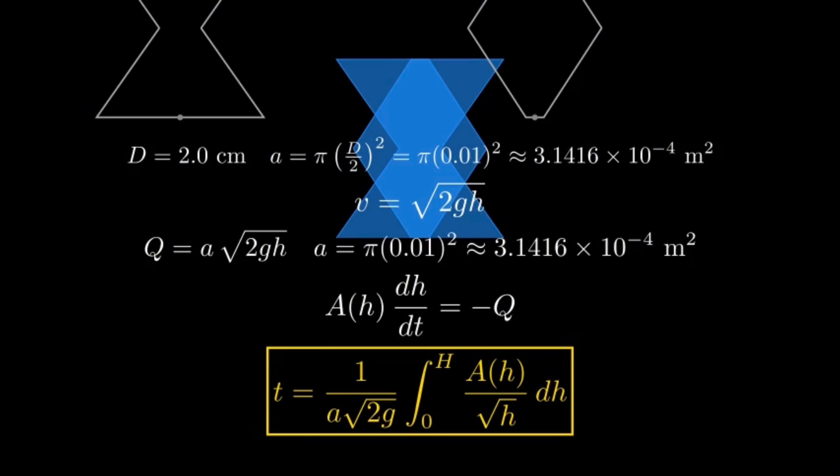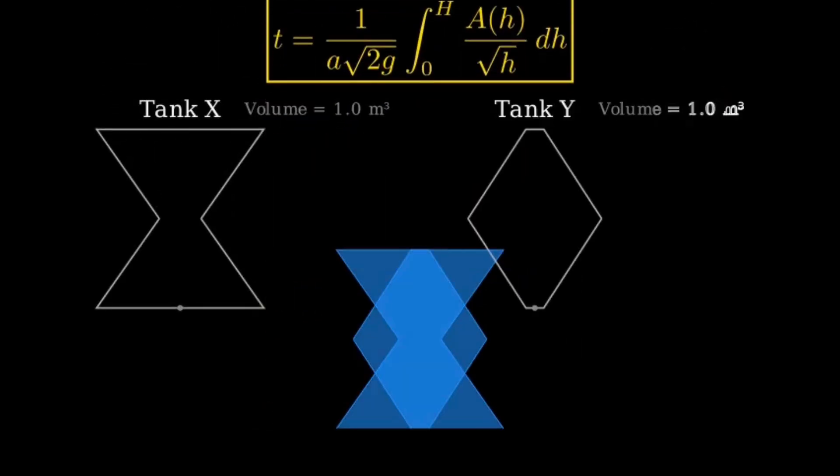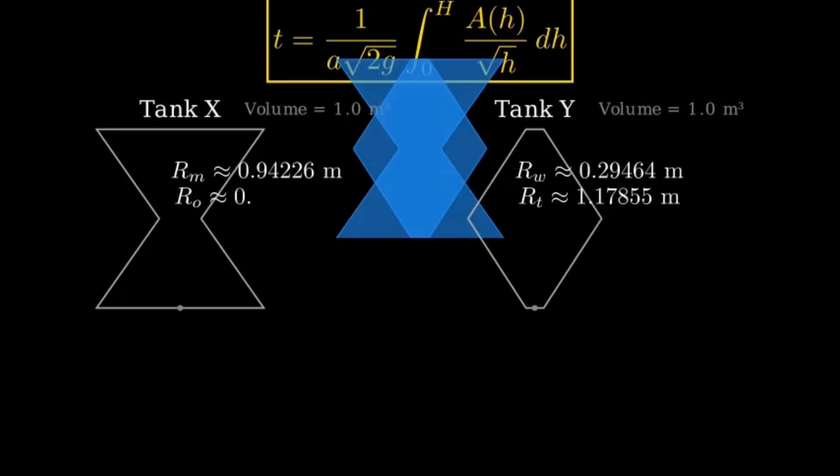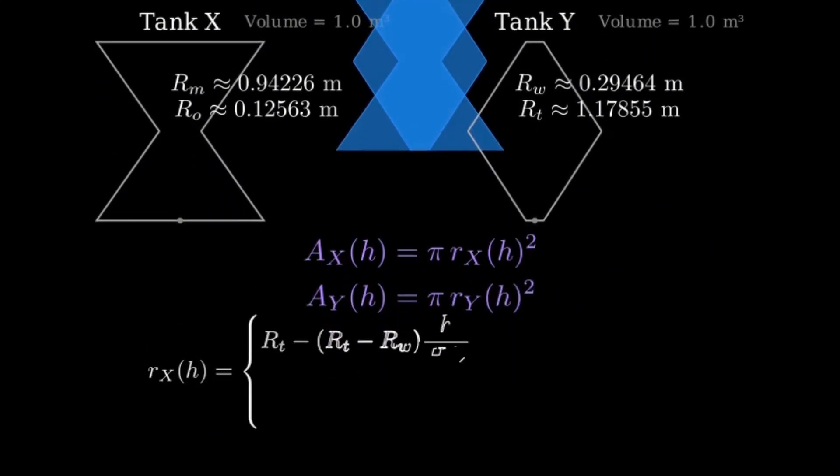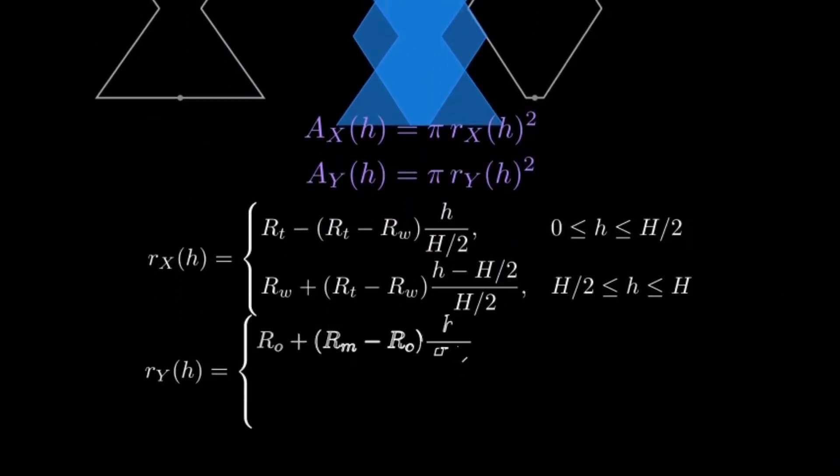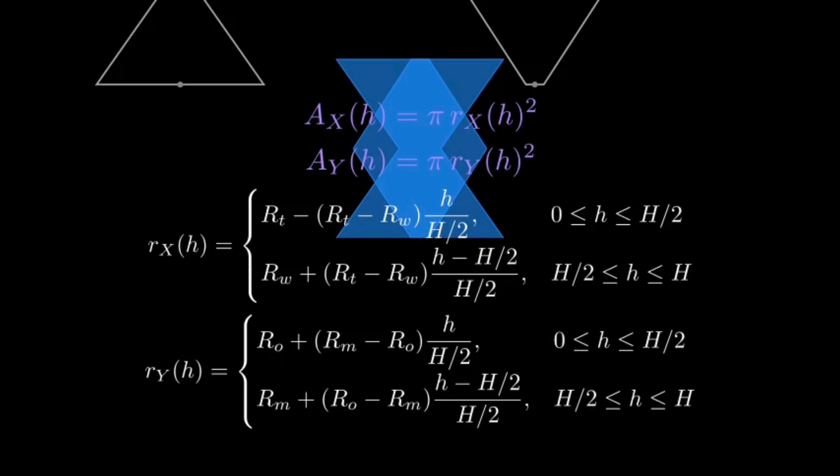To evaluate the integral, we need A of H, the cross-sectional area as a function of height. We model each tank with a piecewise linear radius. Then A of H equals pi R of H squared. For Tank X, an hourglass with a narrow waist at mid-height, the waist radius is 0.29464 meters, and the top and bottom radius is 1.17855 meters. For Tank Y, which bulges in the middle, the middle radius is 0.94226 meters, and the top opening radius is 0.12563 meters. The precise piecewise formulas are shown here.